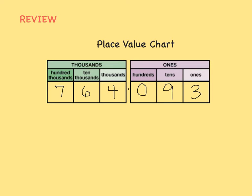You know how to use a place value chart to find the value of a digit in a number. For example, the 7 in this number is worth more than just 7. It is in the hundred thousandths place, so it has a value of 700,000!